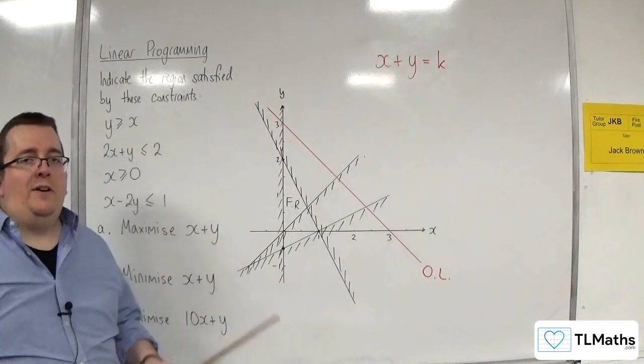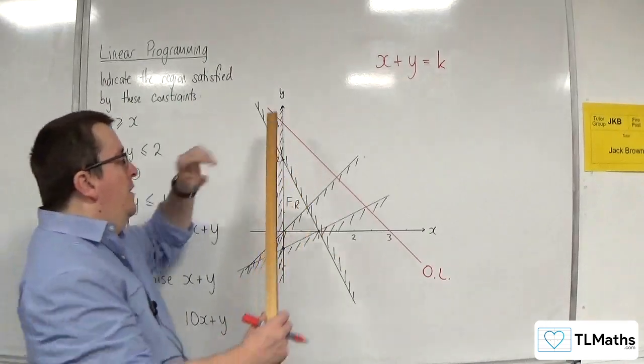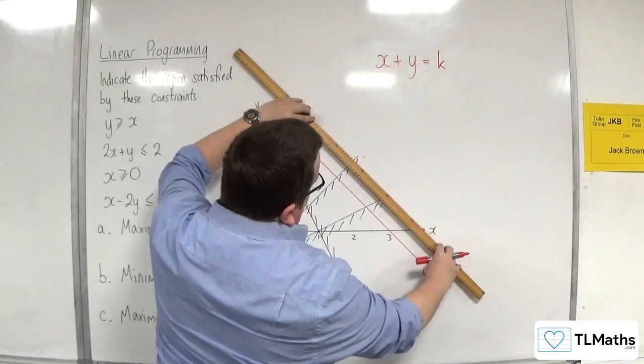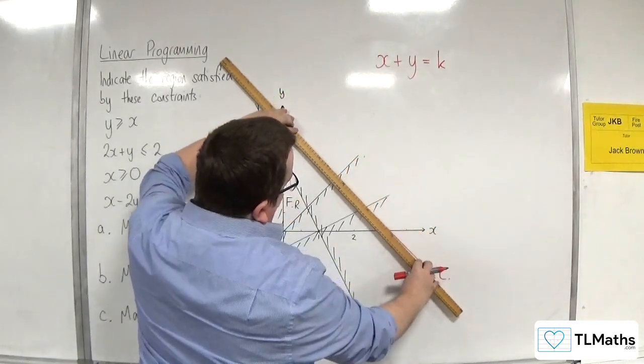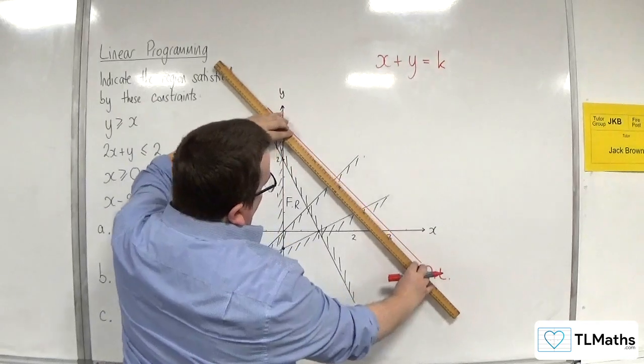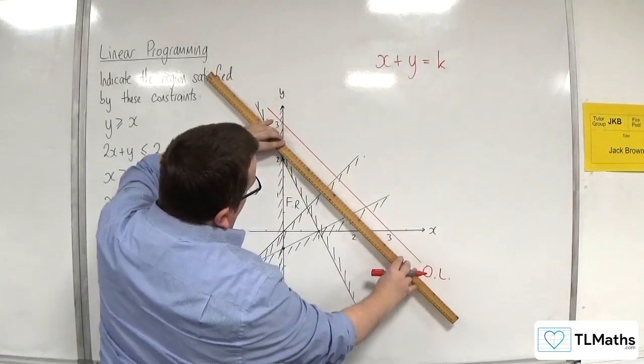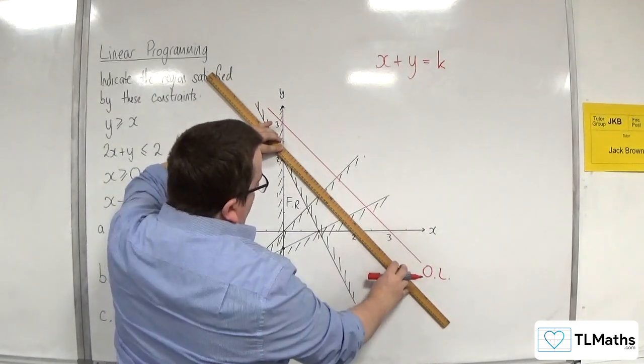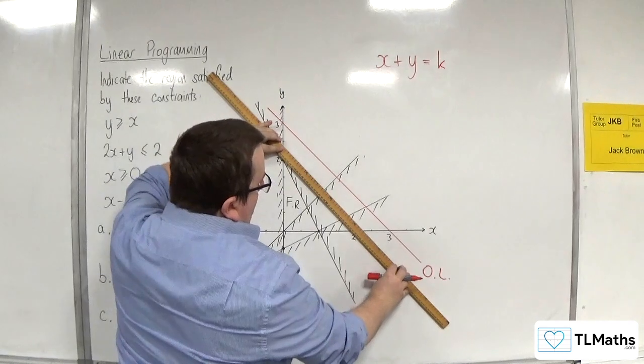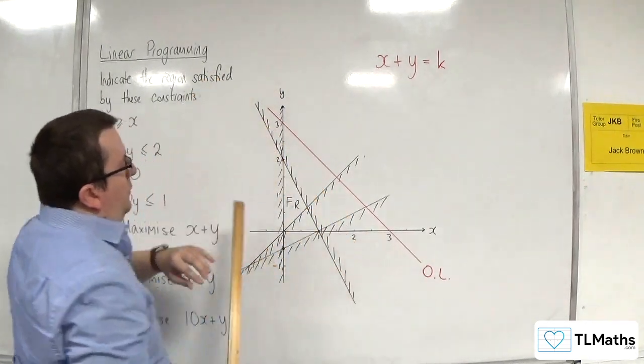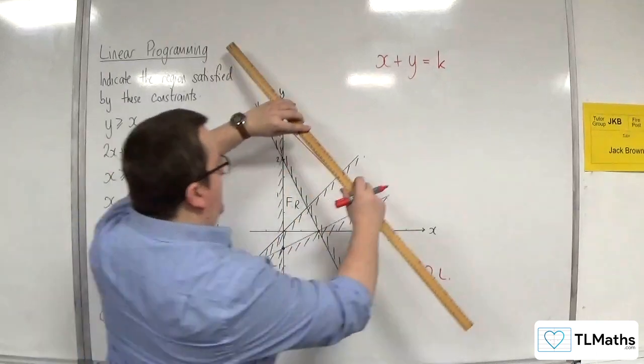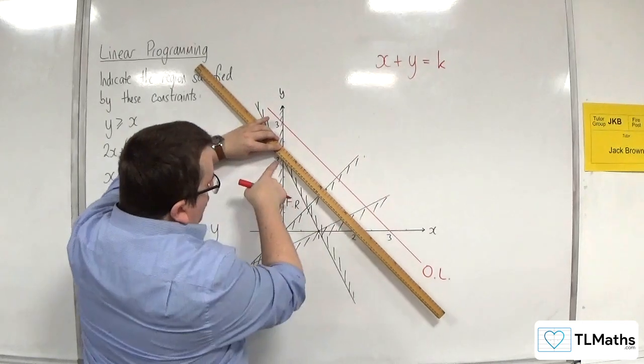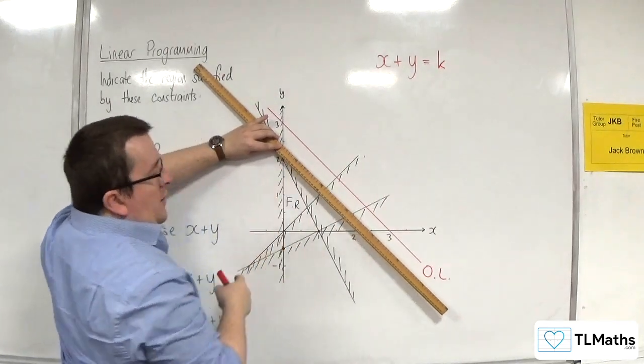And essentially what it is identifying is imagine that you have your ruler and you are looking at all of the lines that are parallel to that objective line. And I'm going to be coming into my feasible region like so. And the first point that I hit that's inside the feasible region will maximize the objective function.